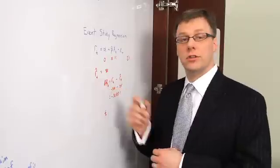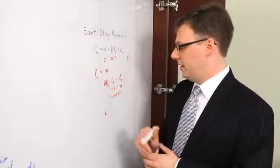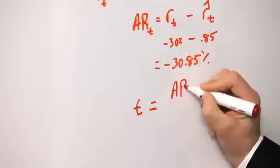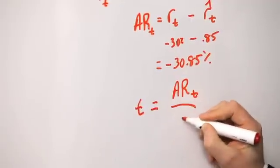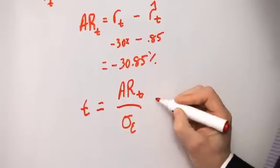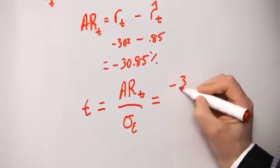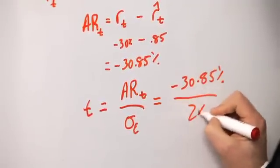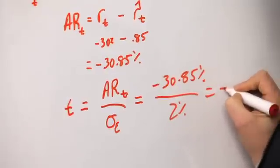Assuming that abnormal returns are normally distributed we can calculate what's known as a t statistic which is simply defined as the abnormal return at time t divided by the standard deviation of the errors, what I'll call sigma e. In this case that's minus 30.85 percent divided by 2 percent or roughly minus 15.